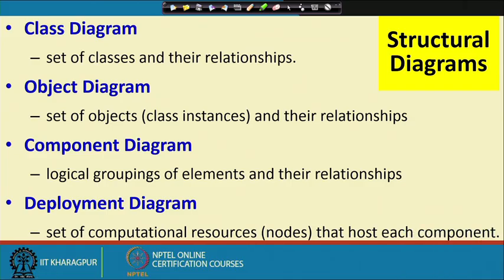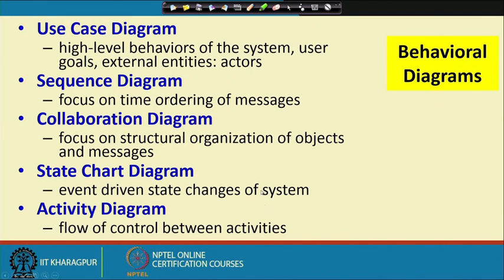The structural diagrams consist of the class diagram — a set of classes and their relationships — and the object diagram — a set of objects and their relations. The component diagram represents a logical grouping of elements and their relations, and the deployment diagram shows where these are hosted. The behavioral diagrams are the use case diagram, the sequence diagram, collaboration diagram, state chart diagram, and activity diagram.